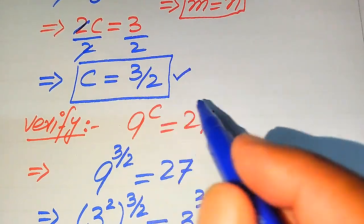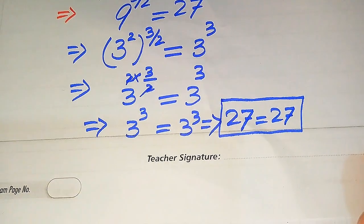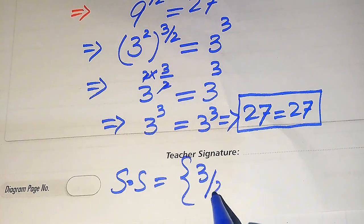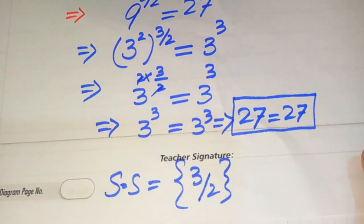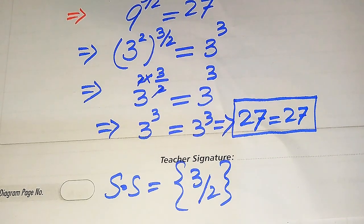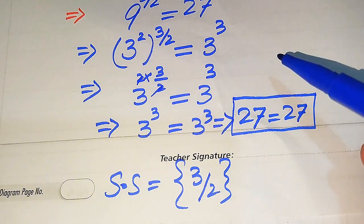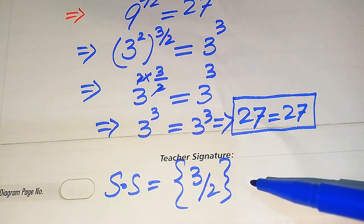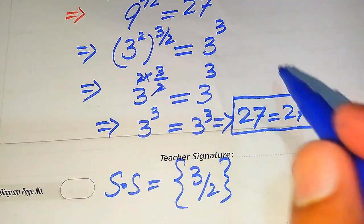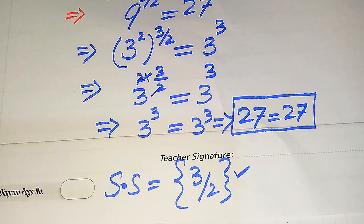This shows that C equals 3 over 2 satisfies the given equation, so we conclude that the solution set of the given question is {3/2}. To clarify: a root which does not satisfy the given equation is called an extraneous root, and a root which does satisfy it is called the solution. Here we have no extraneous root — only one solution, C equals 3 by 2. Thank you for watching; please subscribe for more videos.